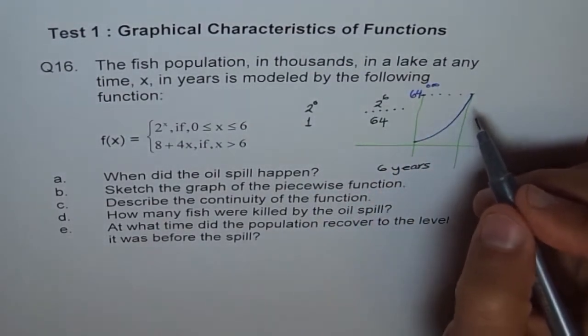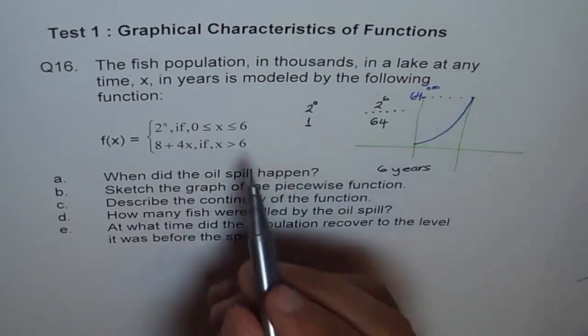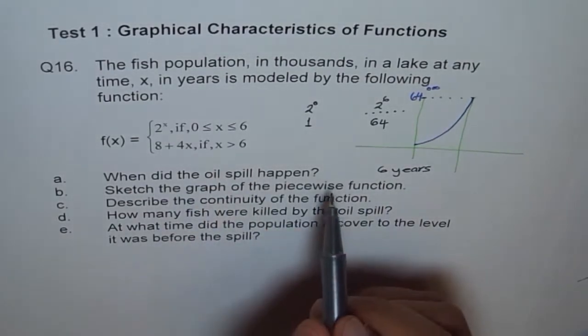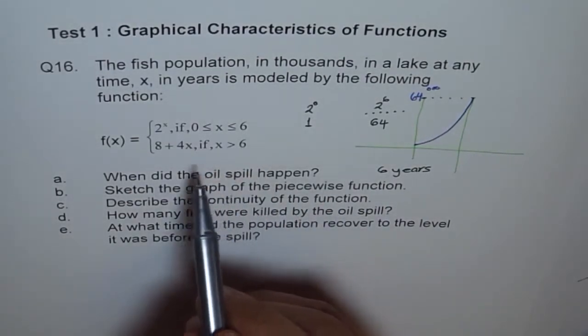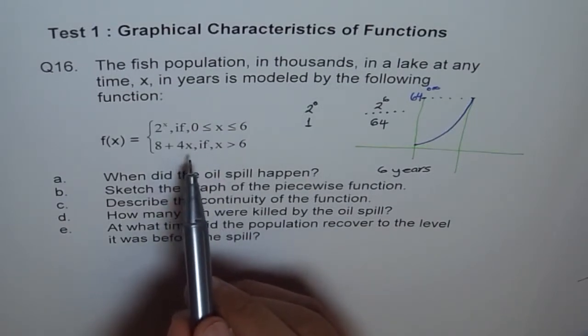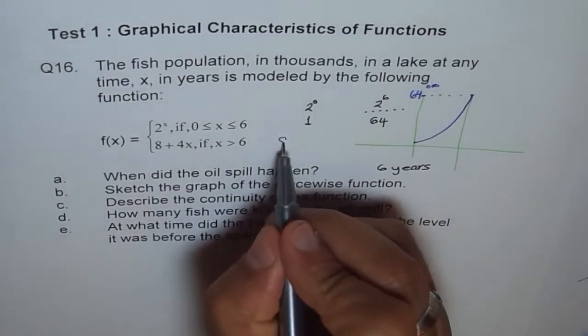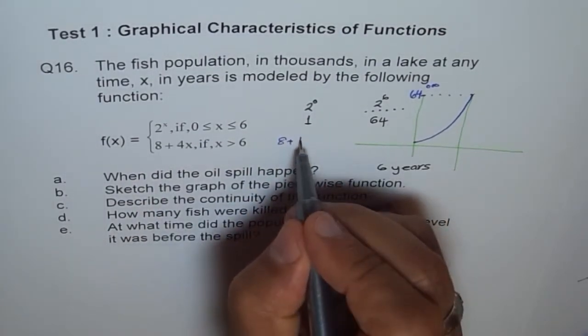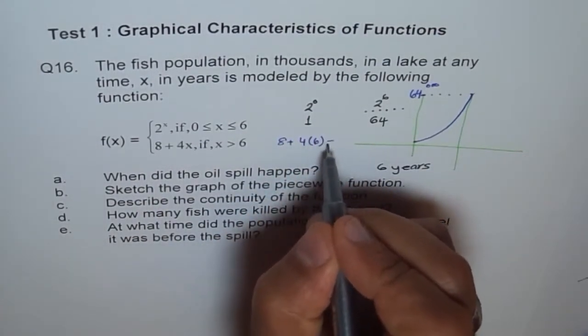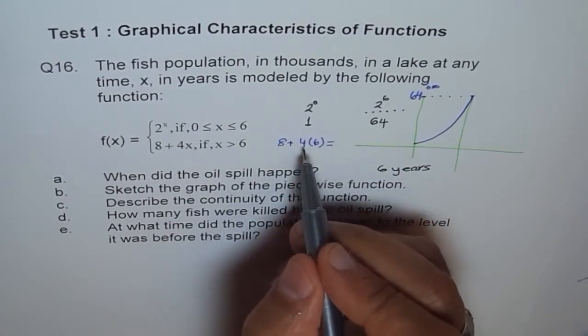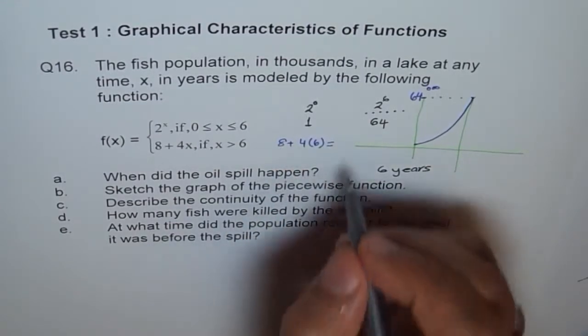Now, what happened at 6 years? After 6, there was an oil spill, so many fish will die. How many? At 6, we can plug in the value here and find. So 8 plus 6 times 4. We get 8 plus 4 times 6 is 24. So we add 24 and 8 and get 32.